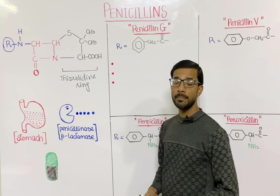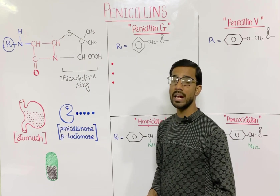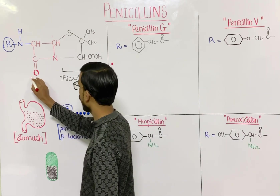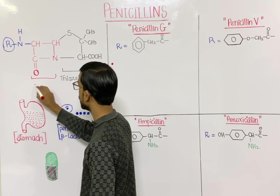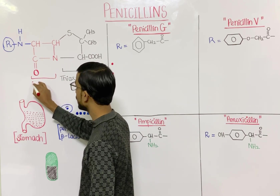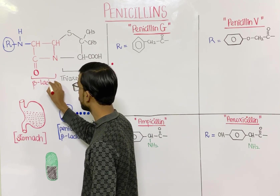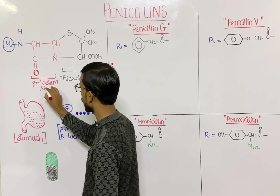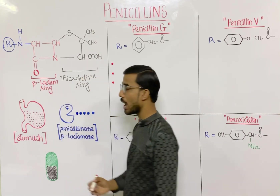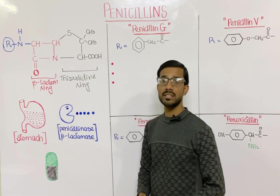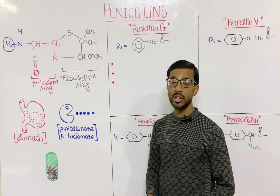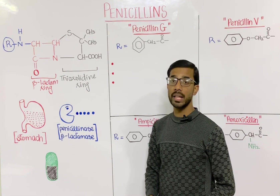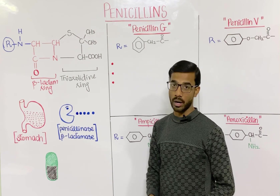The next component is the beta-lactam ring. In red color you will see the beta-lactam ring. On the basis of the presence of the beta-lactam ring, we call these drugs beta-lactam drugs.